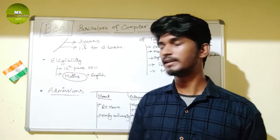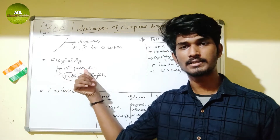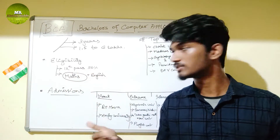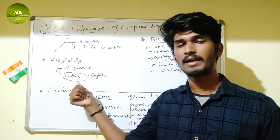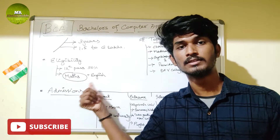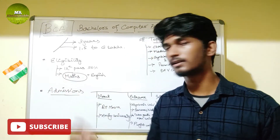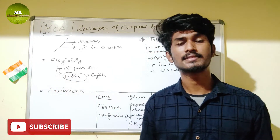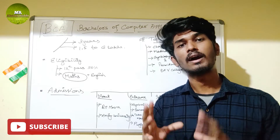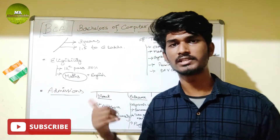The eligibility criteria is 12th pass out with at least 50 percentage. Subjects required include Maths and English. However, Maths is not compulsory in all colleges — some colleges do not require Maths for admission. Mathematics will be covered within the 3-year BCA course.